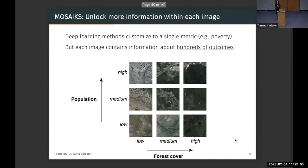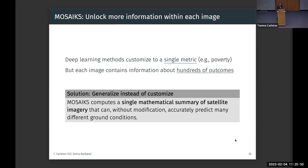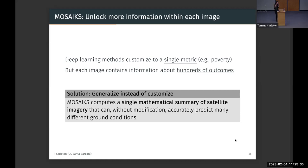Instead of customizing features to a single metric like a deep learning pipeline would, we give a really wide set of features and then use linear regression to pull out the pieces important for each specific outcome. This stands in contrast to standard deep learning, which adjusts the feature definitions to fit the forest cover problem specifically. We're using randomization techniques developed by co-author Ben Recht — originally used to encode genetic sequences — and porting them to satellite imagery, replacing costly optimization with generalized randomization.